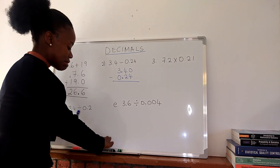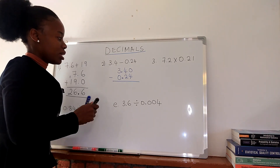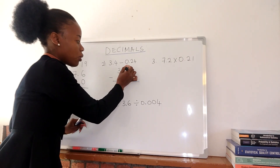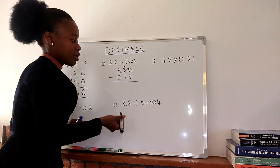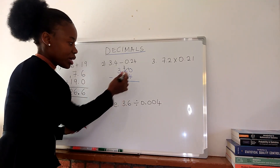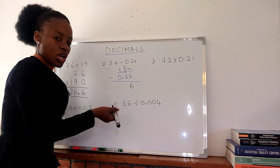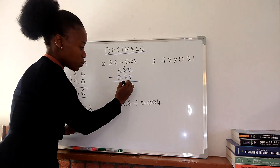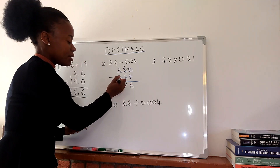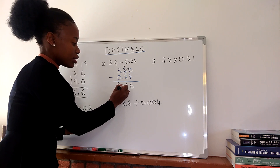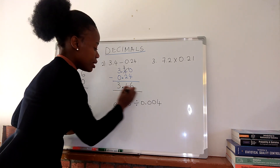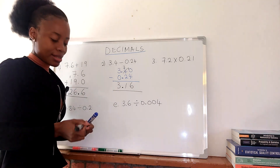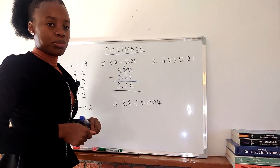You're going to borrow 1 from the 4, leaving 3. This becomes 10, and 10 minus 4 is 6. Then 3 minus 2 is 1. So the decimal point goes here and we have 3.16. So 3.4 minus 0.24 equals 3.16. Now let's go to multiplication.